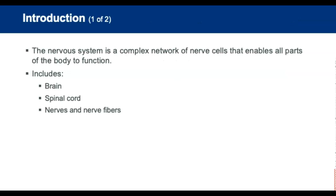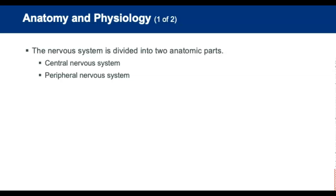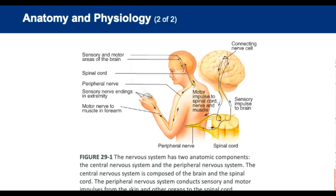The nervous system is a complex network of nerve cells that enables all parts of the body to function. The nervous system includes the brain, spinal cord, nerve fibers, and nerves. The nervous system is well protected. The brain is protected by the skull. The spinal cord is protected by the bony spinal canal. And despite this protection, serious injuries can damage the nervous system. The nervous system is divided into two anatomic parts: the central nervous system and the peripheral nervous system.